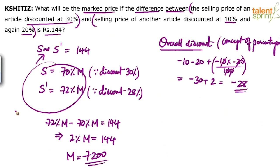And you don't have to write all these steps in the exam. I think you should be capable enough of doing this calculation mentally, without having to put it on paper. So it shouldn't take more than 30 seconds in my view. 70% of mark price, 72% of mark price, difference is 2%. That 2% is equivalent to 144. 100% will give you 7,200. So that's the answer.